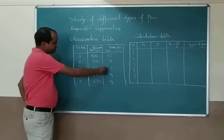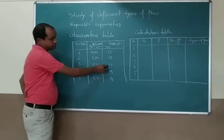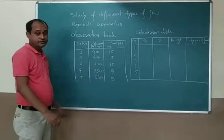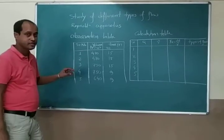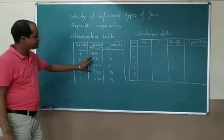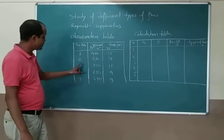Here if you observe, time is 15, 15, 15, but here volume will be different. Why is it different? Because we are changing the discharge. We are changing the discharge, that's why we need to find the difference.